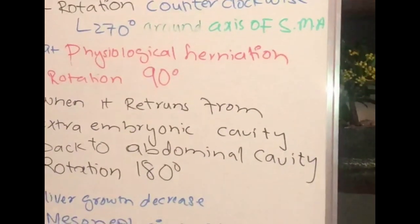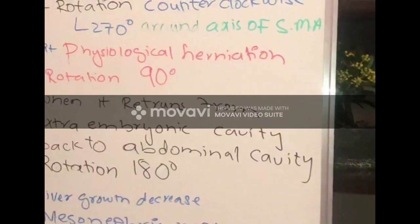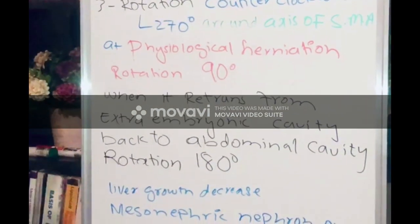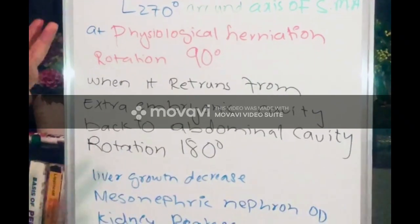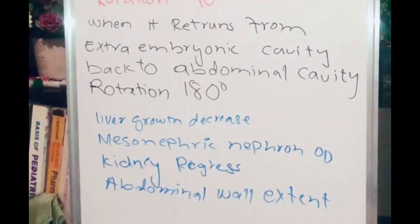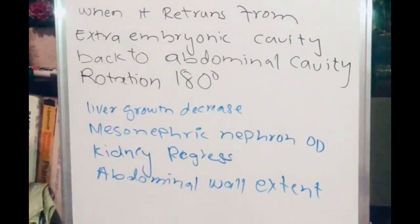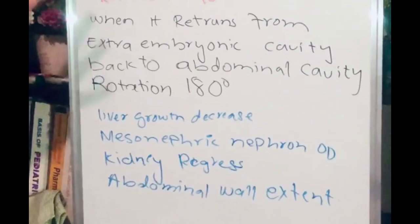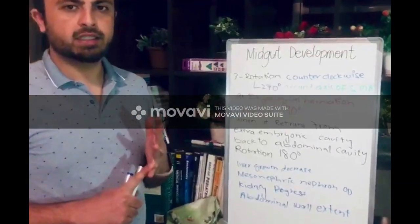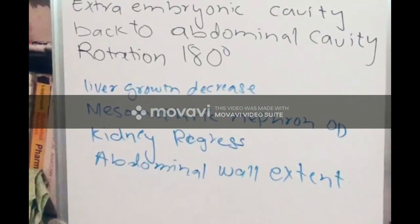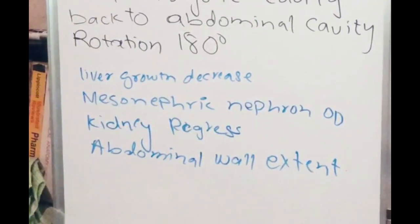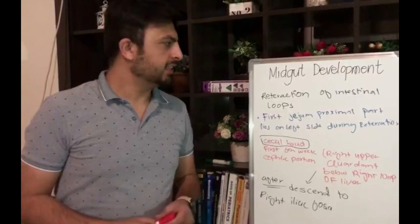During the time of herniation, the rotation is only 90 degrees. When the intestinal loop returns from the extra-embryonic cavity back to the abdominal cavity, the rotation is 180 degrees. The primary intestinal loop comes back to the abdominal cavity for three reasons: first, liver growth decreases; second, the mesonephric nephrons of the kidney regress; and third, the abdominal wall extends.